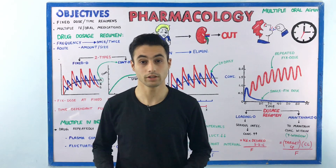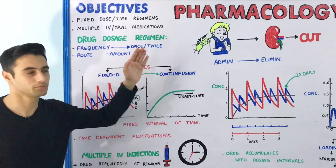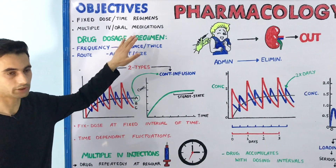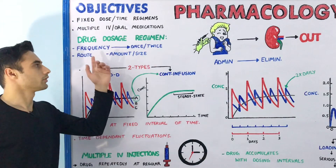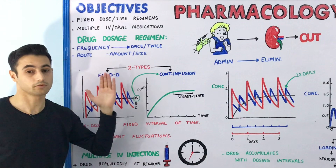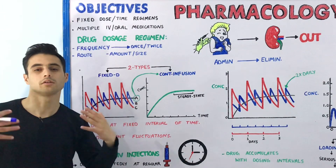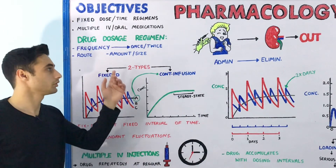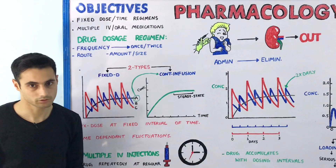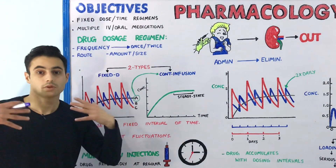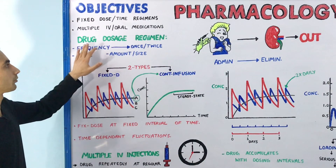Hey everyone, this is Dr. Kazi. In this video we are going to learn about what is the fixed dose regimen, also known as the time regimen, and what happens during multiple IV or oral medication. The drug dosage regimen in simple terms consists of the frequency of the drug, the amount and size of the drug, as well as the route of administration — for example, whether 5 mg, 10 mg, or 15 mg should be taken, through intramuscular, intravenous, or intradermal route, and whether it is taken once daily, two times a day, or three times a day.